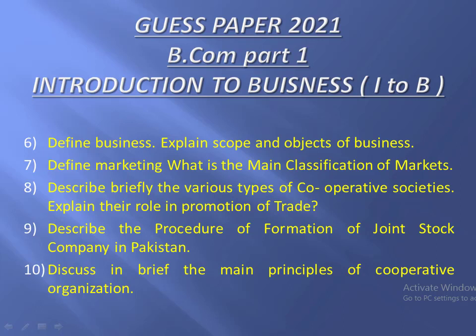तो इन दस questions में पिछले five questions में एक question most important बताया था। इसी तरह अगले पांच में question number six — objects of a business, what is business, scope and objects of a business — इसको भी आपने ज्यादा अच्छे तरीके से तैयार करना है। यह इनकी निस्बत ज्यादा important है और paper में आने के chances भी ज्यादा हैं।